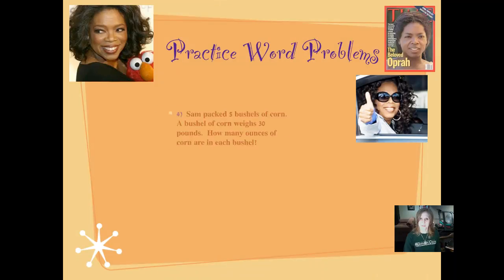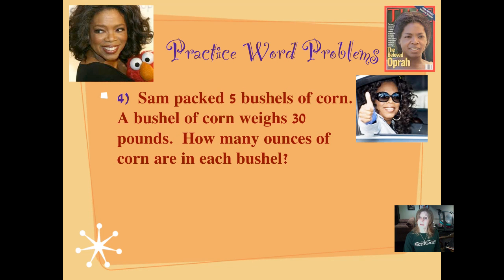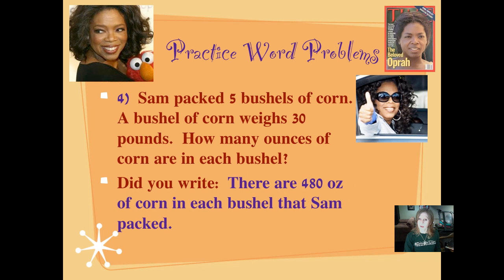Now we're going to practice word problems. Sam packed five bushels of corn — that's a certain kind of sack size of corn. A bushel of corn weighs 30 pounds. How many ounces of corn are in each bushel? Pause it and push play when you've figured it out.